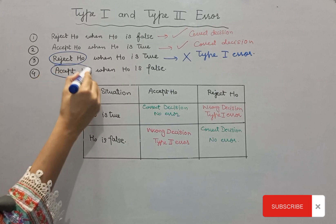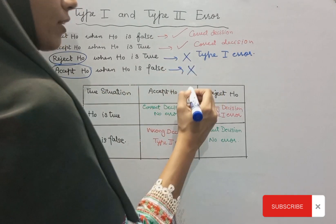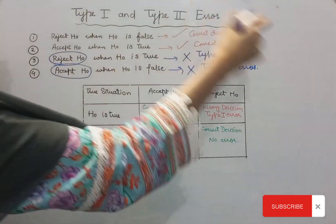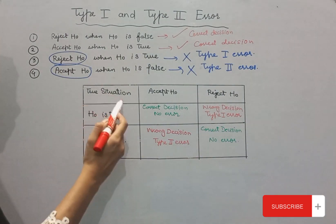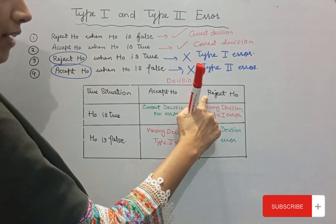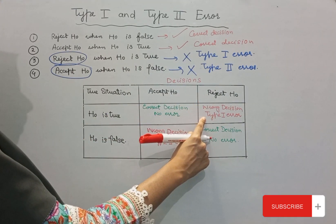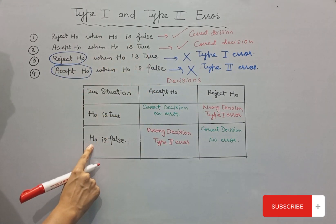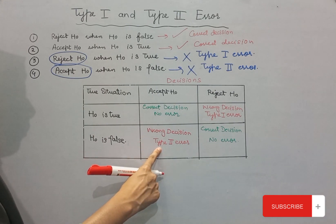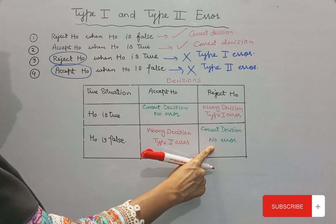The fourth decision is: accept H0 when H0 is false. The null hypothesis was wrong and we accepted it — that decision is also incorrect, and we call this a Type 2 error. To summarize in a table: if H0 is true and we accept it, correct decision; if H0 is true and we reject it, wrong decision — Type 1 error. If H0 is false and we accept it, wrong decision — Type 2 error. If H0 is false and we reject it, correct decision — no error.